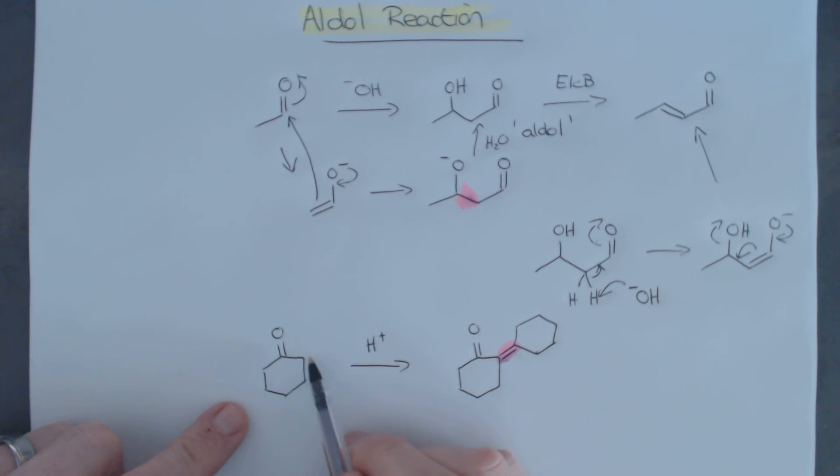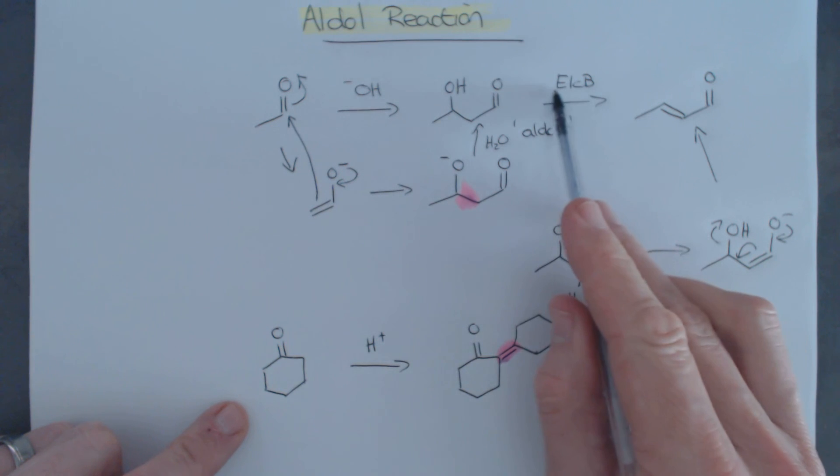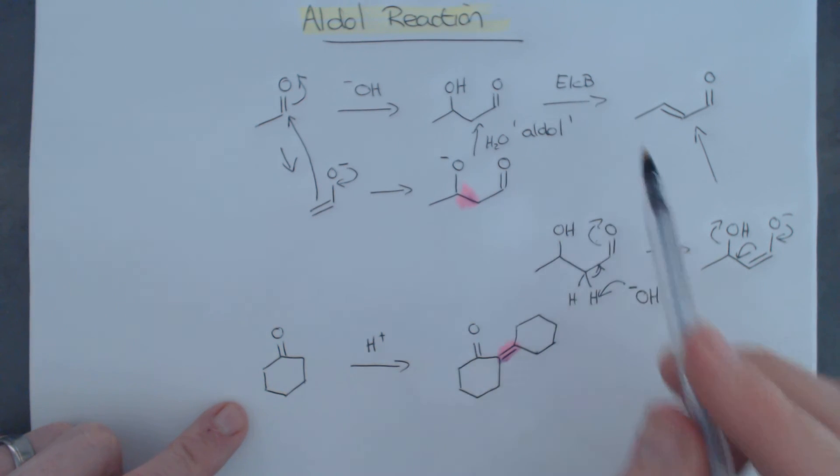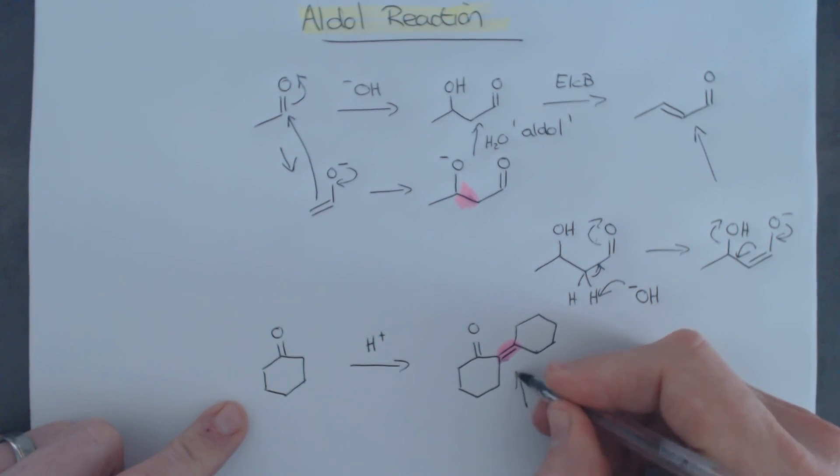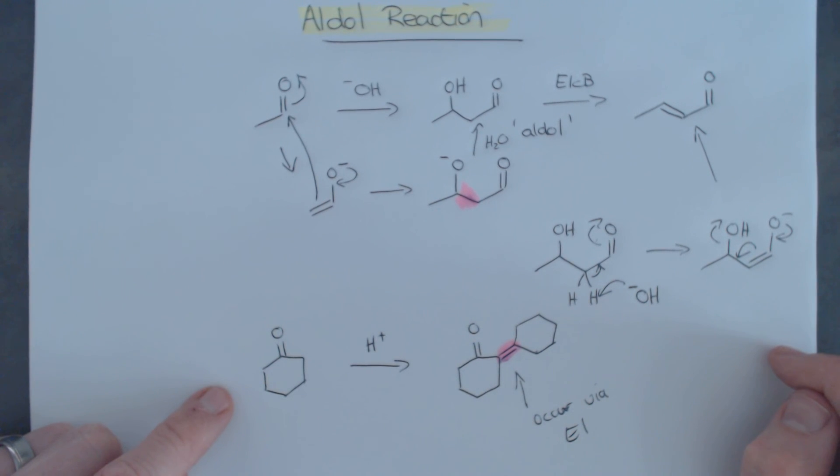So, first of all, we'll probably form an enol, which can then react with the ketone. But also, this elimination over here cannot be E1CB, and that is because we don't have any base present. So, over here, this elimination you're going to find will actually occur via an E1 mechanism. So, go and try that out for yourself and see if you can get that to work.